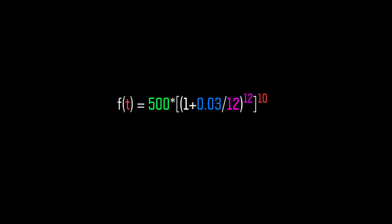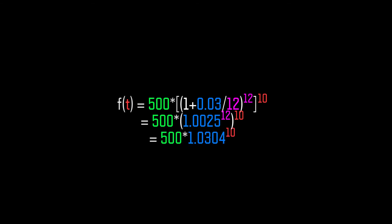For monthly, we plug the numbers into the equation: f(t) = 500 times (1 + 0.03/12) to the power of 12 times 10. That gives you 500 times 1.0025 to the power of 120, which equals 500 times 1.0304 to the power of 10, and that gives you $674.68.